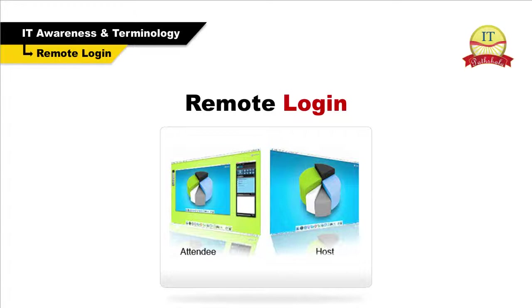When connected, the software opens a window on the host system containing a view of the target's desktop. Desktop sharing software typically includes two distinct programs: the desktop sharing client that runs on the host computer, and a viewer program that allows the remote user to view the contents of the host computer's desktop in a resizable window. Remote Login will only work if the host computer is powered on, connected to the internet and running the desktop sharing software.